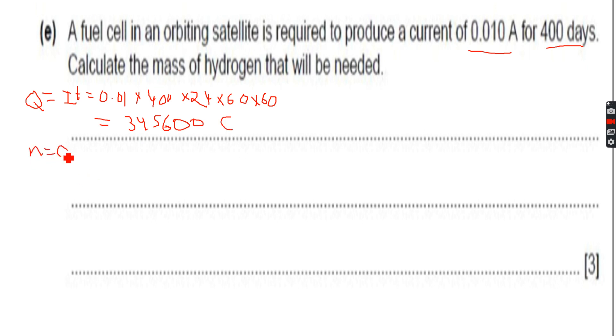Let's calculate the number of moles of electrons, which is Q over F. This equals 345,600 over F, the Faraday constant, which we know as 96500 coulombs per mole. When I calculate this, I get 3.58 moles of electrons to three significant figures.